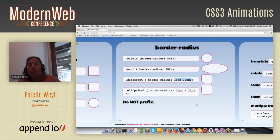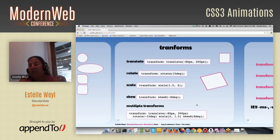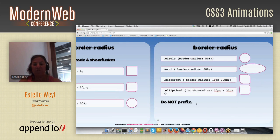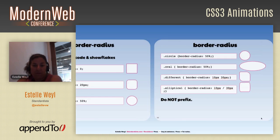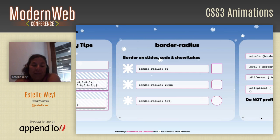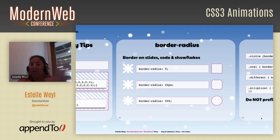One other thing to note: when you use a value like 200px and your element is only 100px, the browser brings it down proportionally. So if you say border-radius: 100px / 200px on a 50px by 50px box, you'll end up with 50% on two sides and 100% on the other sides.